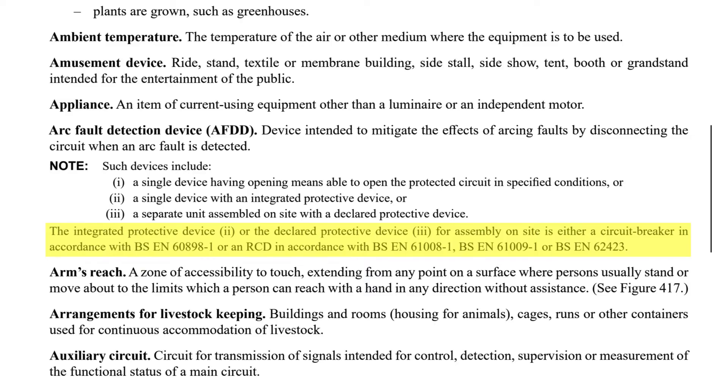The integrated protective device two or the declared protective device three for assembly on site is either a circuit breaker in accordance with BSEN 60898-1 or an RCD in accordance with BSEN 61008-1, BSEN 61009-1 or BSEN 62423.